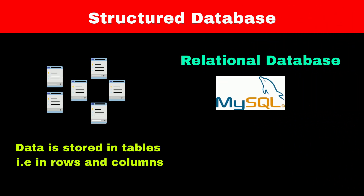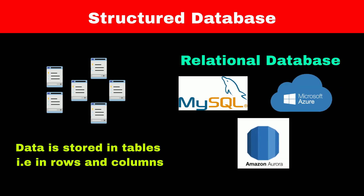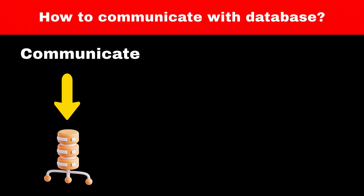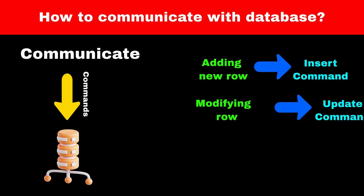Examples of relational databases are MySQL, Azure SQL Server, and Amazon Aurora. So, whenever we have to communicate with databases, we have to give them a command — that is, which operation to perform. For example, for addition of a row, we have to give the insert command. For modifying a row, we have to give the update command.